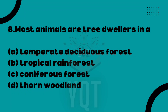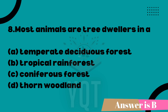Next: most animals are tree dwellers in which type of forest? This is a direct NCERT question. Option A: temperate deciduous forest. Option B: tropical rainforest. Option C: coniferous forest. Option D: thorn woodland. The correct answer is Option B — tropical rainforest.